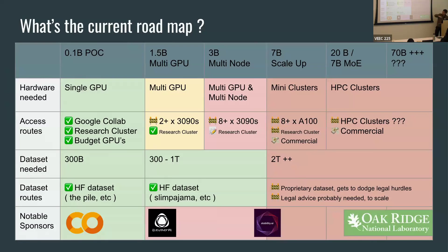Other issues when scaling past 7 billion parameters: proprietary datasets start to become a problem. This is a struggle within our own community — we constantly get compared to models that don't even comment on their dataset. The question gets asked: can we include such-and-such news articles dataset? And the answer is no, we can't — but we're quite sure others did it and never disclosed what was in their dataset. This is the kind of internal struggle open source groups face: if they want to open their dataset, they're being compared to models using proprietary datasets that effectively dodge legal hurdles.